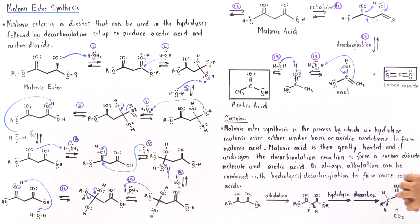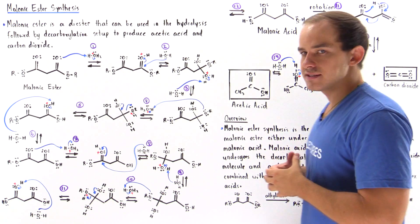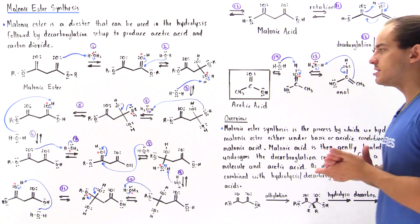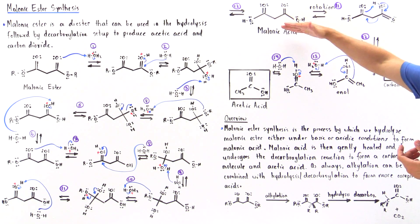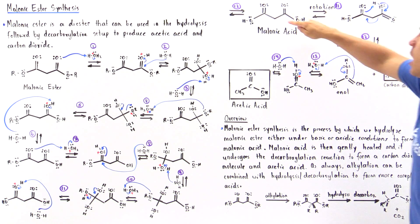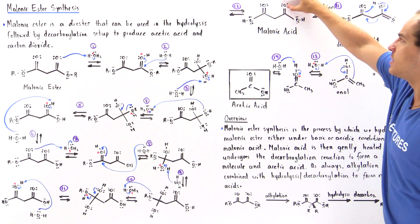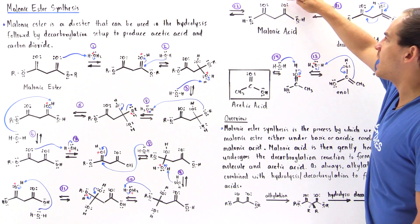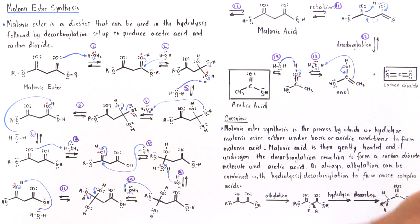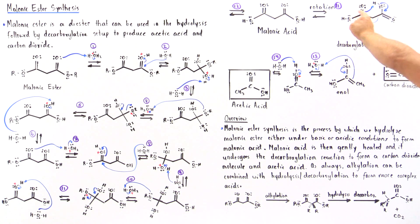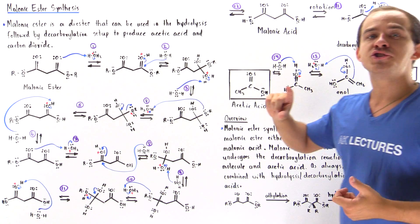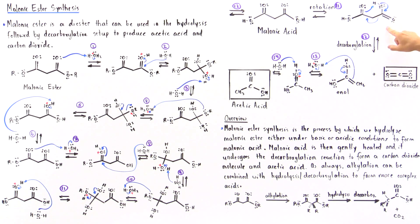These first twelve steps constitute the hydrolysis steps — hydrolysis under acidic conditions. In the next step, a rotation of this bond takes place. When this bond rotates, this hydroxy group ends up on this side and this carbon-oxygen double bond ends up pointing downward, forming the following molecule. When this hydroxide is close to this carbon-oxygen double bond, a decarboxylation reaction takes place if we gently heat this rotated malonic acid.